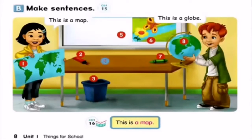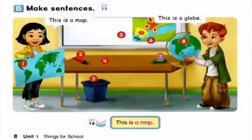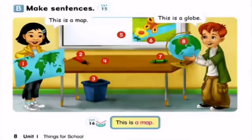Number four: this is a table. Number five: this is a board. Number six: this is a poster. Number seven: this is a crayon. Number eight: this is a globe. Number seven: this is a cube.